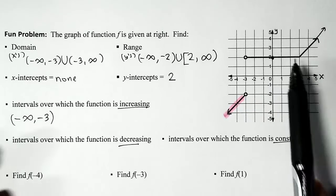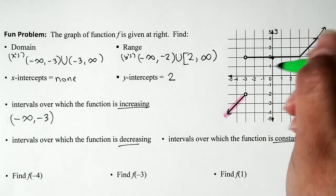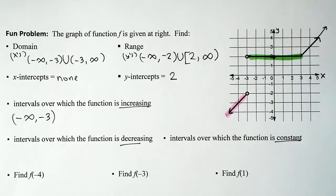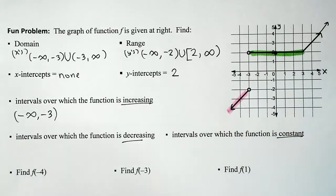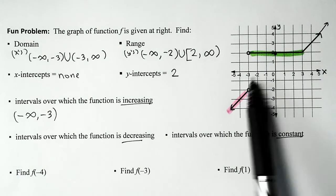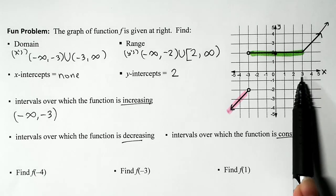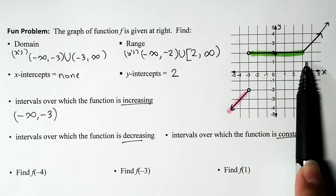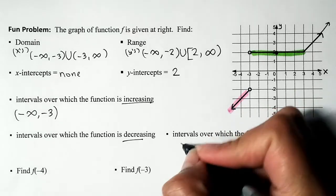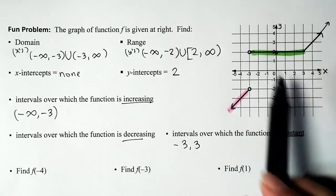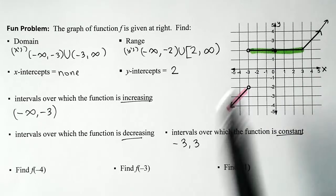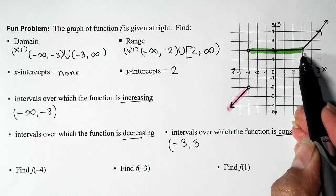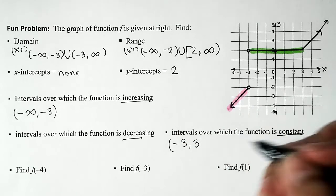Continuing to trace, we resume and the graph is flat — constant. The function is constant from x equals negative 3 to x equals positive 3. In interval notation that's the interval from negative 3 to positive 3. Negative 3 has an open circle so it gets a parenthesis; positive 3 is graphed so it gets a bracket: (-3, 3].